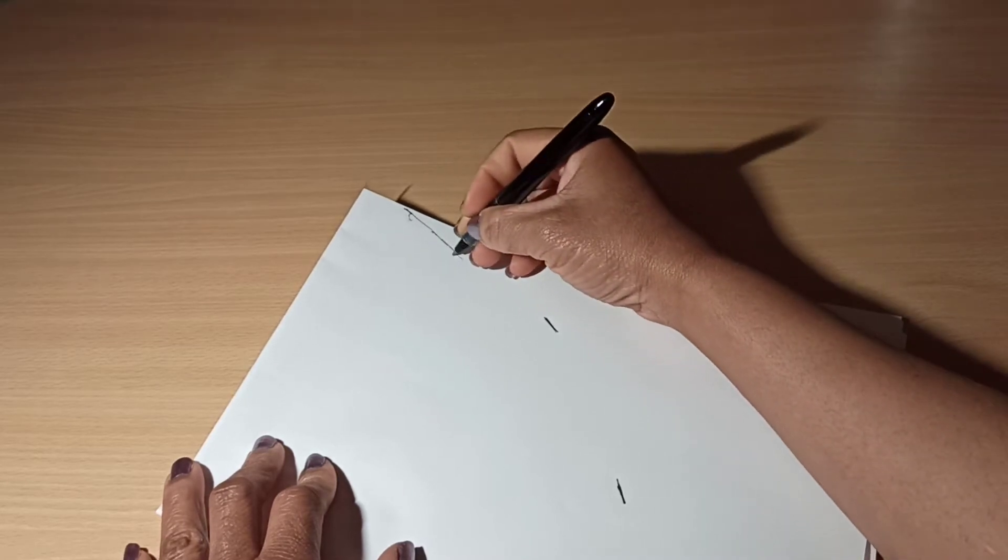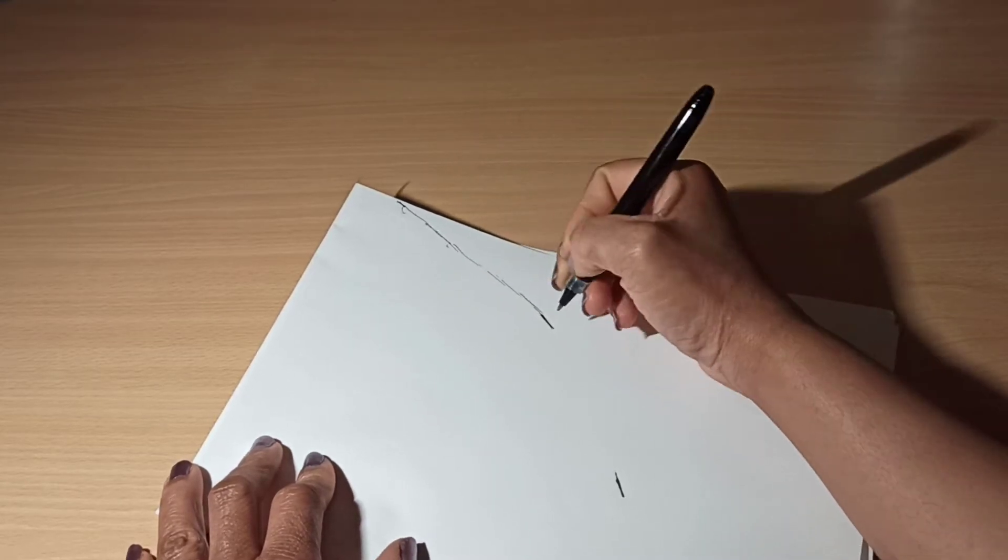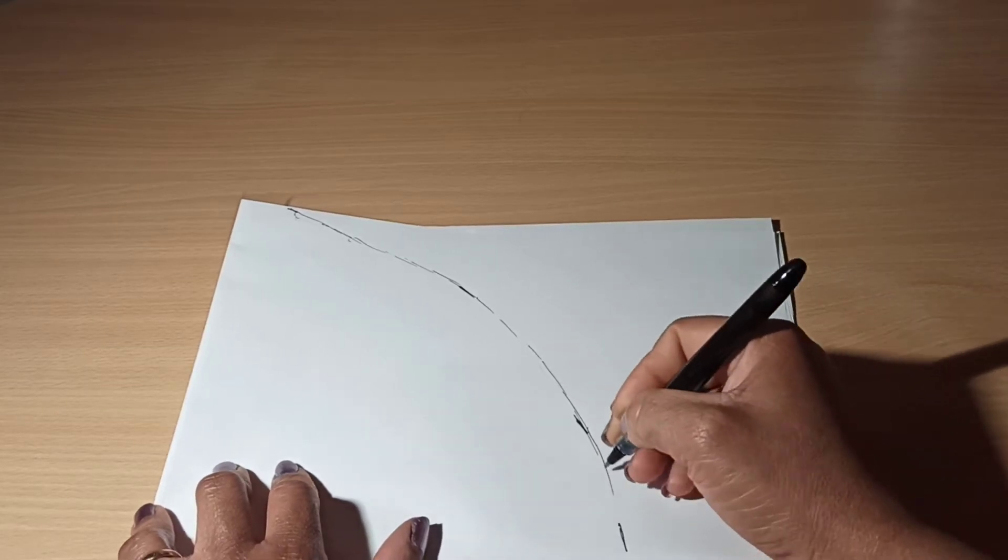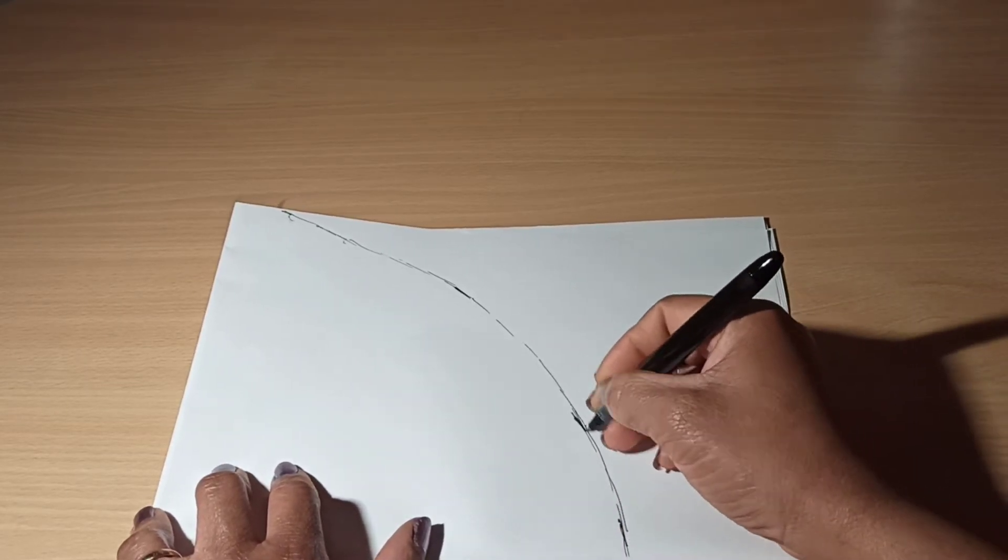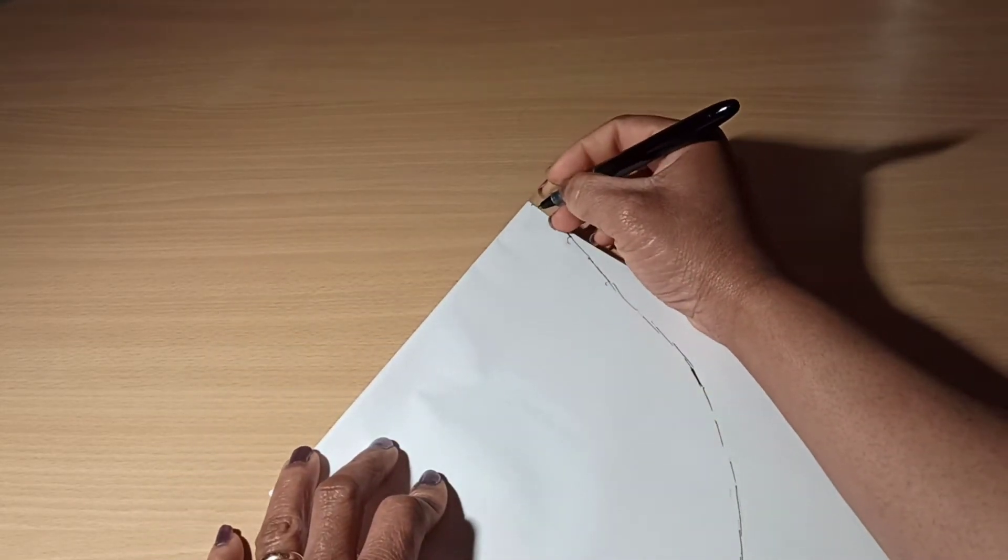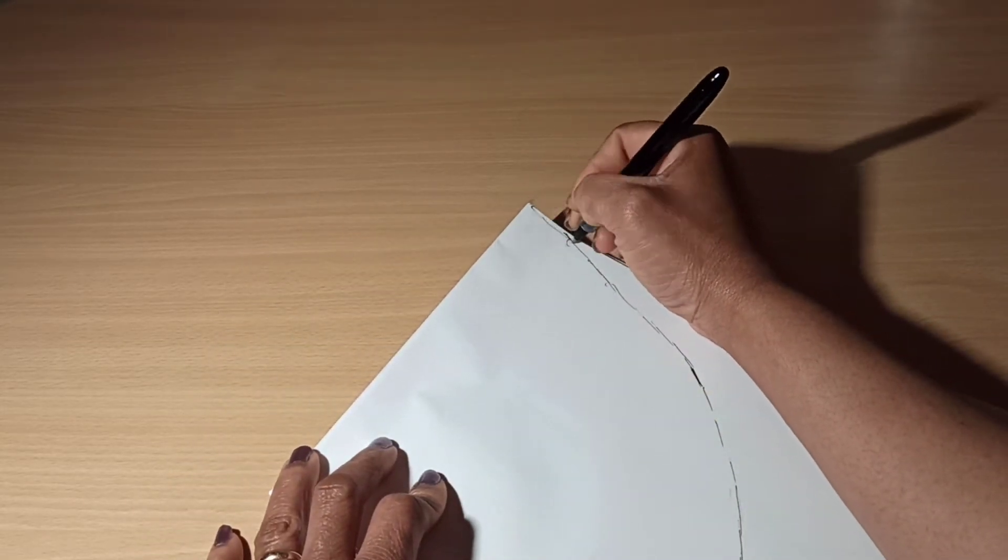Once you finish making the markings, you want to connect them together like that. If you're not sure you can make a proper circle, you can use your curved ruler to make your curve.